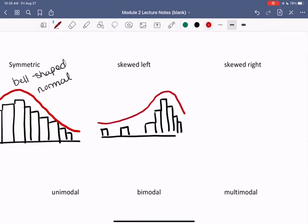And for skewed right, it looks the opposite. We have our chunk of data here, being sort of like a mound or a hill, and then the data sort of drops off.